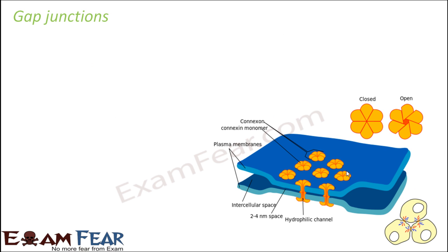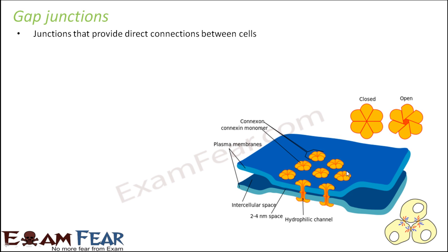The third and last type is the gap junction. These junctions provide direct connections between cells such that the cytoplasm of one cell can interact with the cytoplasm of another cell. It is like a bridge connecting the cytoplasms together so they can communicate with each other.